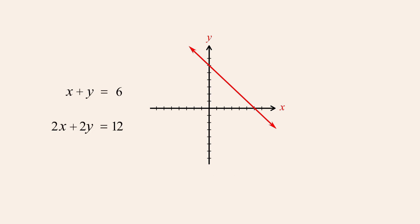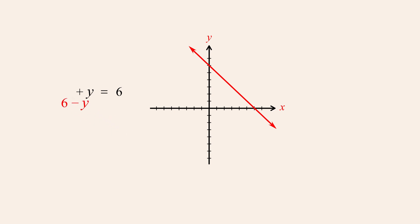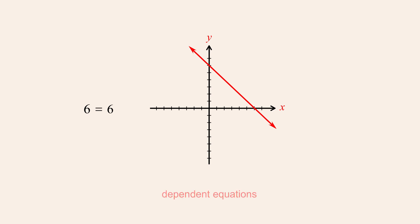Solving this system by the substitution method will also produce a statement of equality between two equal numbers. We first solve the bottom equation for x by multiplying both sides by one-half and then subtracting y from both sides. We can then replace x in the top equation with the result, producing an equation with only the variable y. The two y terms then cancel, leaving us with the statement six equals six. Obtaining a statement of equality between two equal numbers indicates that the equations are dependent. The system, therefore, is consistent with an infinite number of solutions.